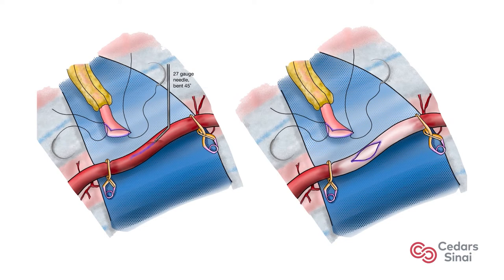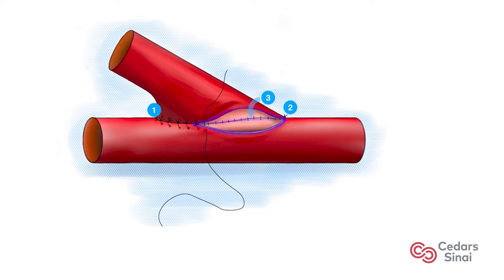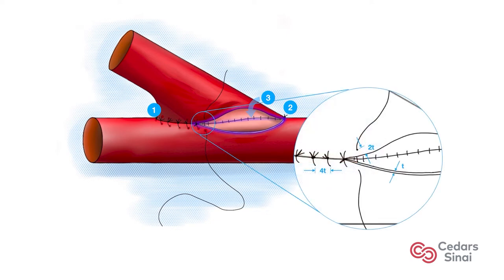Once the temporary clips are placed, the artery is pierced parallel to its long axis with a 27-gauge needle that has been bent 45 degrees. The lumen of the recipient artery is flushed with heparinized saline. The heel stitch is placed first with a fish-mouth donor, then the toe stitch is placed second, followed by the back side of the anastomosis. The stitches go from outside to inside the donor artery and from inside to outside the recipient vessel. The spacing between stitches is in general four times the thickness of the recipient artery, which is approximately three stitches per millimeter in cortical arteries, and the depth of the bite is one to two times the wall thickness. Bite thickness is slightly less with the intraluminal stitches of the deep portion of side-to-side anastomosis because intraluminal suturing inverts the arterial edges.